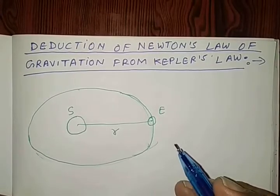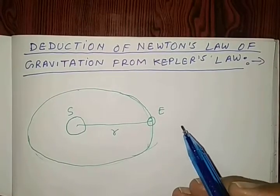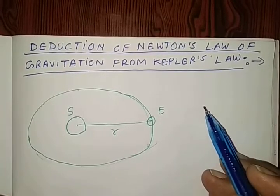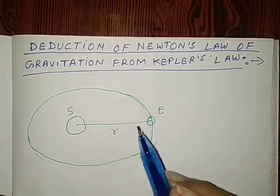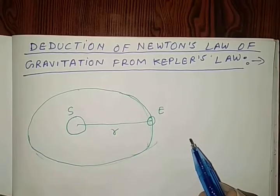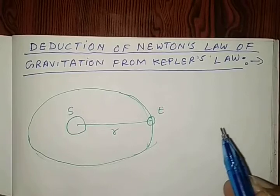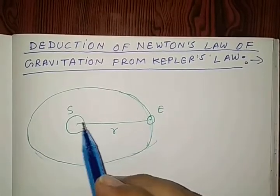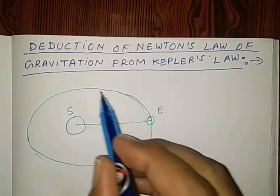Hello. We are going to see Newton's law of gravitation from Kepler's law. So, see how this Newton's law of gravitation is derived from Kepler's third law of planetary motion. Let earth E revolve